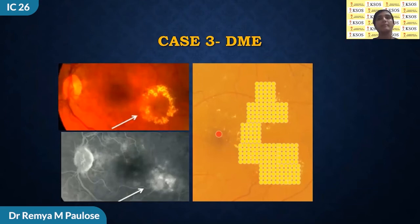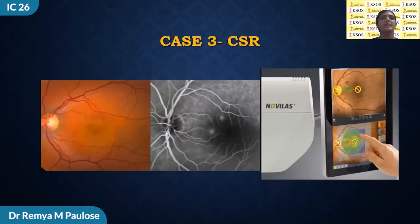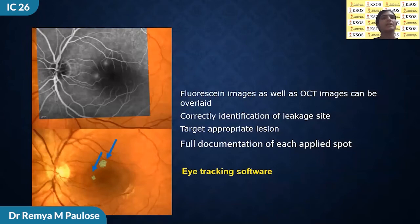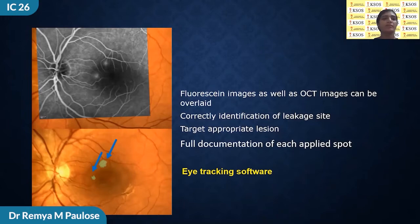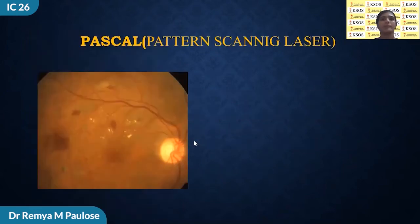Micropulse laser can also be used in cases of diabetic macular edema, wherein according to fluorescent angiography these points of diffuse leakage can be marked and micropulse laser can be delivered in a grid pattern. A navigated laser is a unique platform that combines color, infrared, and fluorescent fundus imaging to produce the most precise laser treatment. Fluorescein images as well as OCT images can be overlaid correctly to identify leakage points and target the appropriate region adequately while minimizing damage to healthy tissue. Eye tracking software is incorporated, which allows precision of laser treatment. NAVILAS also produces full documentation of each laser spot applied, ensuring true traceability and enabling pre-planned laser positions with automated execution of laser spots.